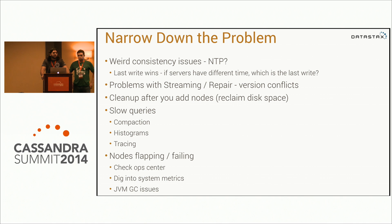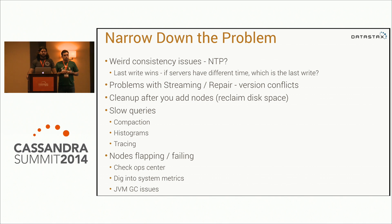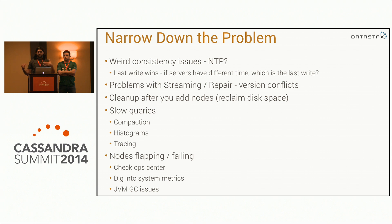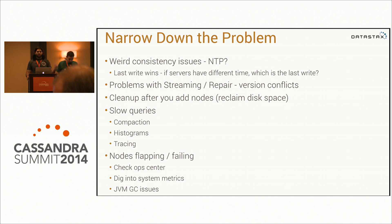When you hit a problem, the first thing you want to do is narrow it down to what exactly is causing it. One of the first things to check is whether you have any problems with clock skew. With any data that's written in Cassandra, there's a last-write-wins timestamp added to every single piece of data. If your clocks are off, you'll have timestamps that don't make sense, and your last write may not win. You could write data, overwrite it, then do a read and get the old data because it had a timestamp 10 minutes in the future. You definitely want to make sure you're running NTP on your cluster, or you'll have really bizarre issues that are hard to track down.